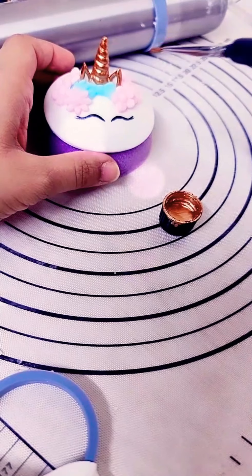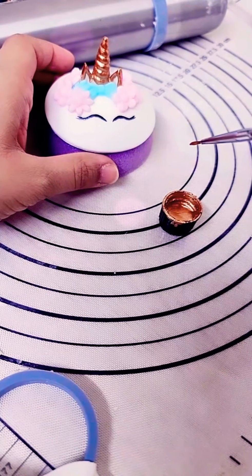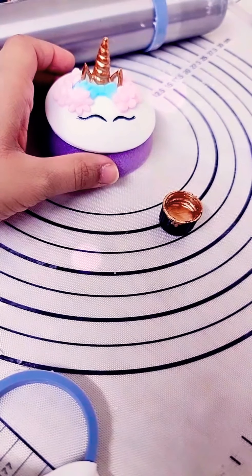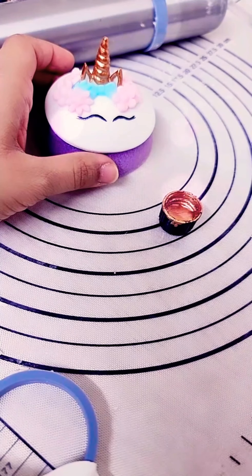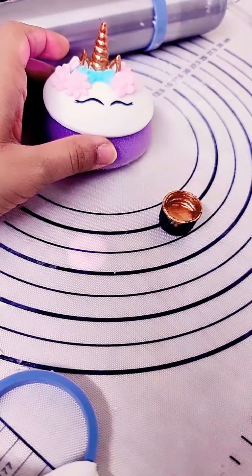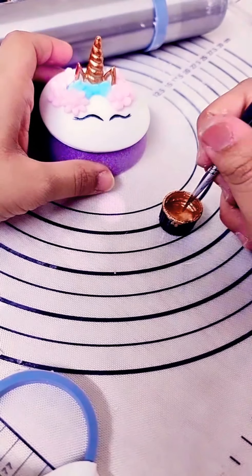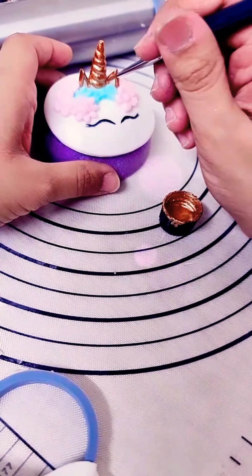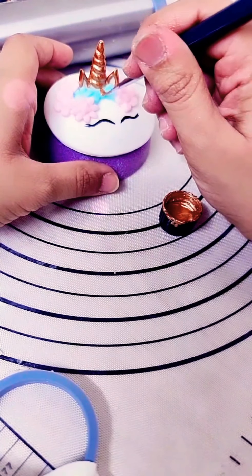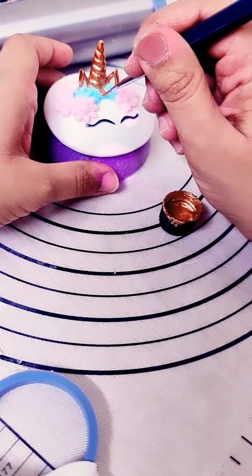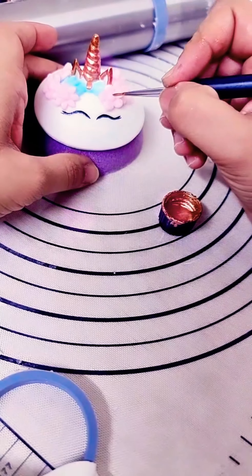You know, I'm going to put some gold on my little thingy-ma-jiggies, whatever they're called. Little bows, little flowers.